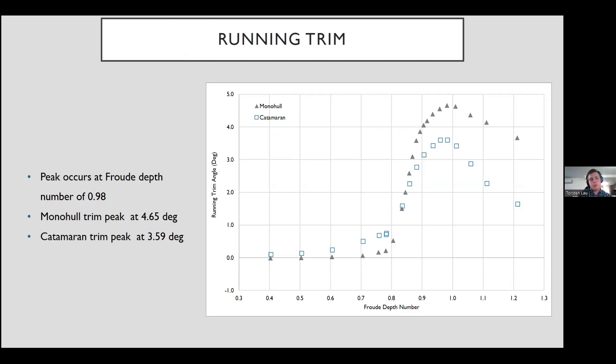These are running trim angles. They're taken using the forward and aft LVDTs. You can see here that in this plot we have a rapid increase after 0.8 again in the transcritical. We also have a peak in the running trim for both of the models around 0.98, which is closer to what we found in the dynamic values. However, this peak did not line up with the static values. The monohull also showed a significantly larger running trim than the catamaran. You can see that the monohull peaked at around 4.65 degrees, where the catamaran peaked at around 3.59 degrees.